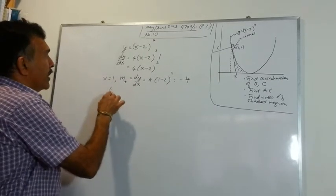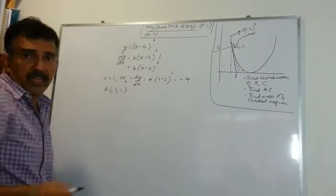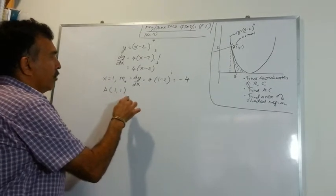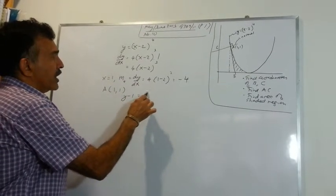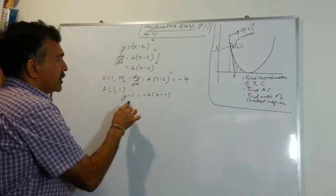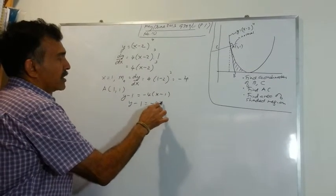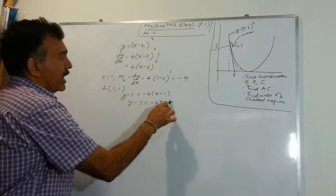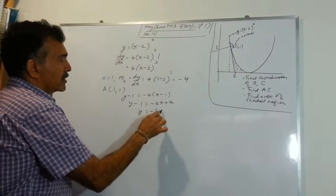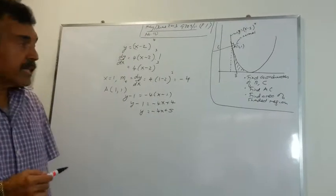Now we have the point A at (1, 1), so we can write the equation of the tangent. y minus 1 equals negative 4 times (x minus 1). This becomes y minus 1 equals minus 4x plus 4, and we get y equals minus 4x plus 5. That's the equation of the tangent.